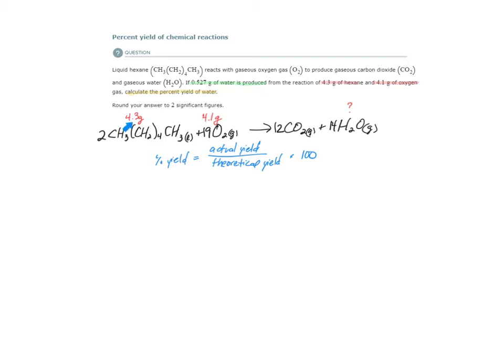We're going to convert from 4.3 grams of this substance to figure out how much water we can make from 4.3 grams of this. And we're going to convert from 4.1 grams of oxygen to figure out how much water we can make from this much oxygen. So, we have 4.3 grams of hexane and 4.1 grams of oxygen. And let me just use the chemical formula of oxygen, O2.